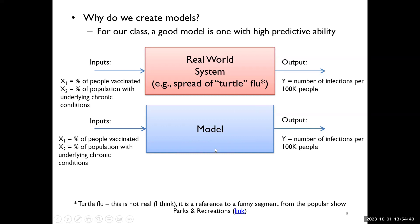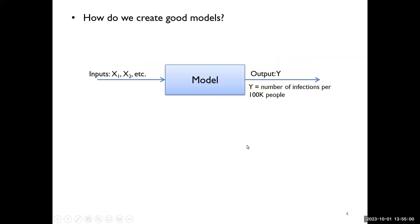In the real world, if X1 were to be some value and X2 were to be some value, this is what would happen in the real world. That's really the point of making models in our class — we want models with high predictive ability. The next question is: how do you actually create good models? We know we need some input parameters X1 and X2 to produce the output Y.